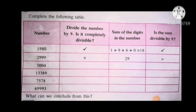Now, the next table. Complete the following table. Again you have 4 columns: the number, whether it is completely divisible by 9, the sum of the digits in the number, and whether the sum is divisible by 9. The first number is 1980: 1 plus 9 plus 8 plus 0 equals 18. 18 is divisible by 9, so 1980 is divisible by 9.